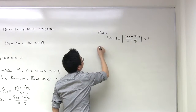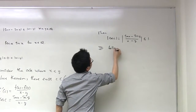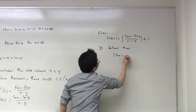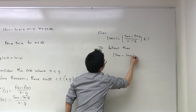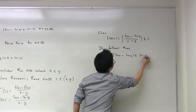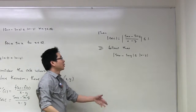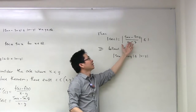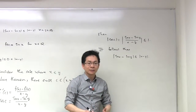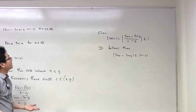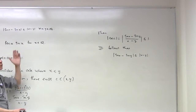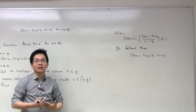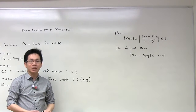It follows that the absolute value of sine(x) minus sine(y) is less than or equal to the absolute value of x minus y, which we obtain by multiplying both sides of the inequality by the absolute value of x minus y. So we have seen that in any case the absolute value of sine(x) minus sine(y) is less than or equal to the absolute value of x minus y, and we have completed solving the problem.